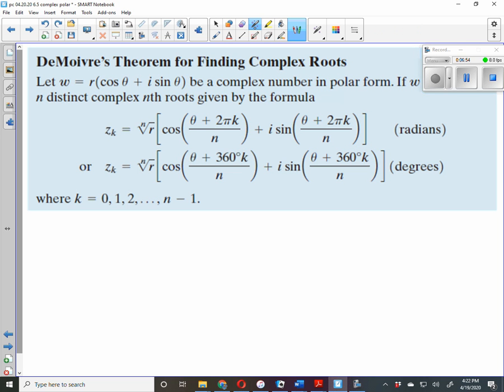When you're trying to find the nth root, notice that you have more than one root. If you're trying to find the cube root, there's going to be three roots. If you're trying to find the square root, there's going to be two. If you're trying to find the fifth root, there's going to be five. So that's what this implies.